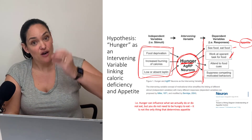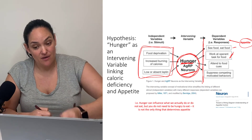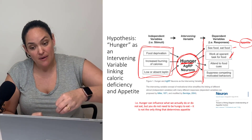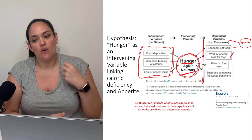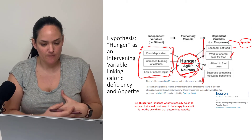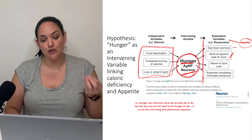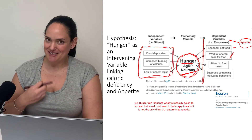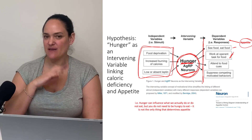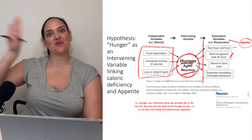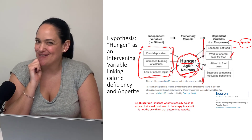If we are hungry and we do see food, we might actually work harder to get it, or eat a lot more as well. So hunger can influence what we actually do or do not eat, but we don't actually need to be hungry to eat, as we all know. So those are a few definitions and explanations, and then we're going to move on to learn more about the neural control of appetite in the next unit.